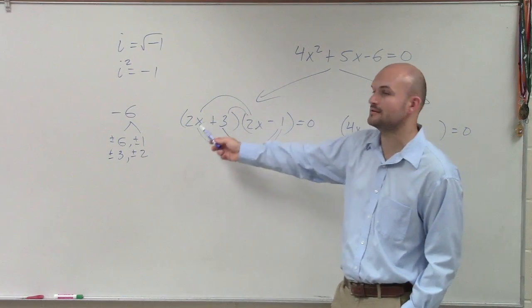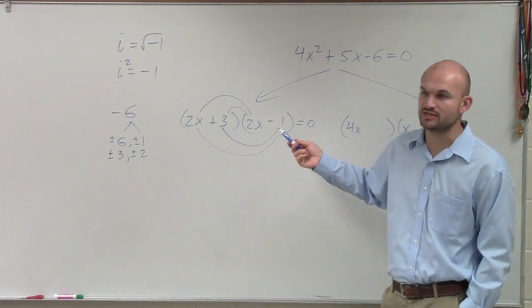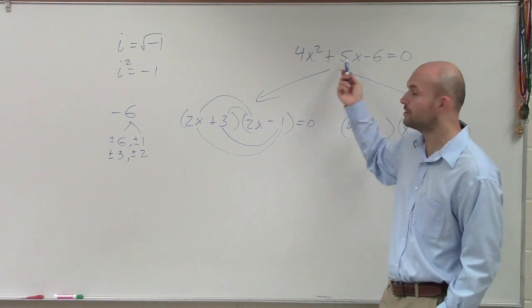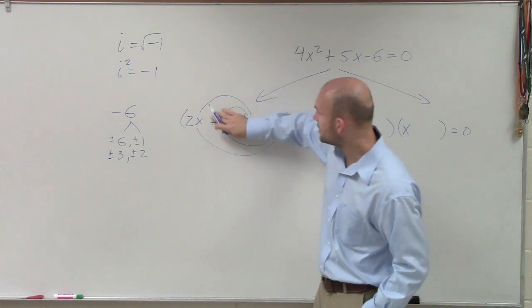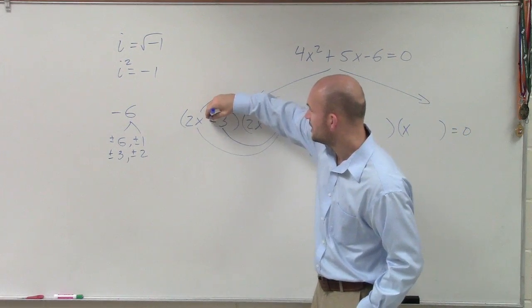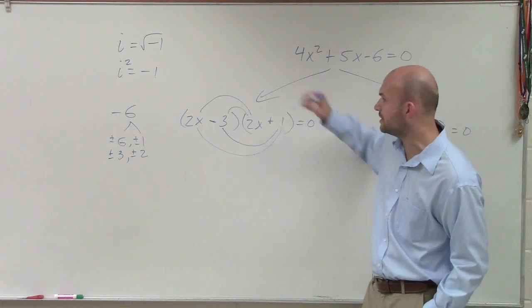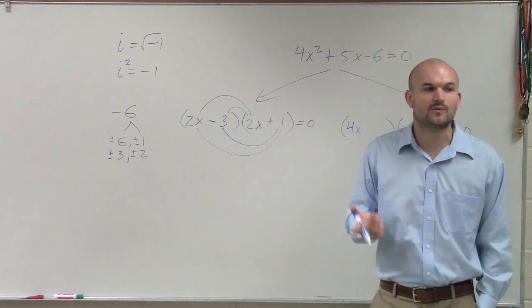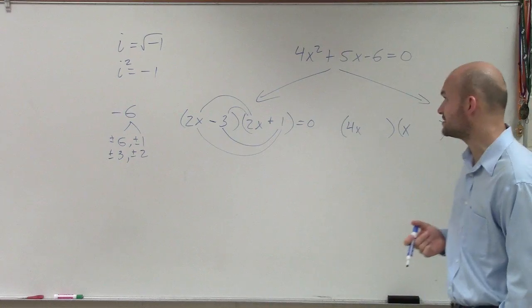And here, I get 6x minus 2x, which is 4x. So I don't get up to 5x. And it doesn't matter which way I do it. I do negative 3, I do positive 1, I switch them around. Either way, I'm not going to get to the correct answer.